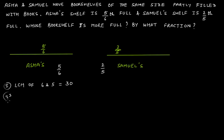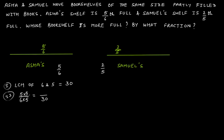The second step is to convert these fractions into equivalent fractions such that the denominators equal the LCM, which is 30. To convert 5/6 into a fraction with denominator 30: what number do I multiply 6 by to get 30? It's definitely 5. Since we multiply the denominator by 5, we also multiply the numerator by 5. So 5/6 becomes 25/30.